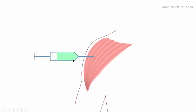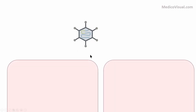Let's say we give the injection of any adenovirus-based vaccine, for example the Oxford vaccine. Adenoviruses have wide tissue tropism — meaning they can attach with and infect a wide variety of different types of cells.